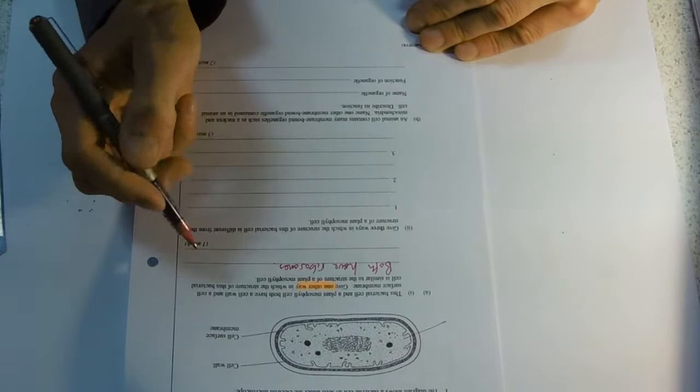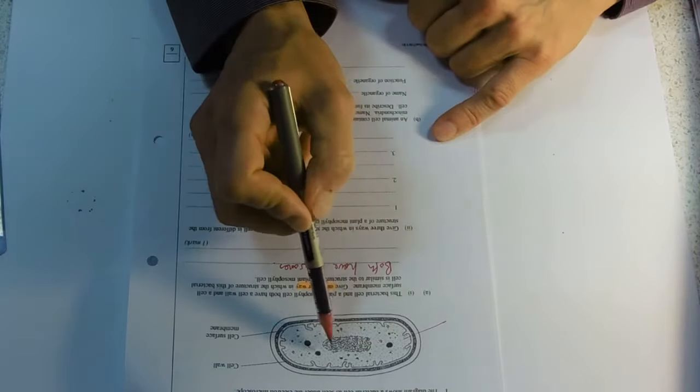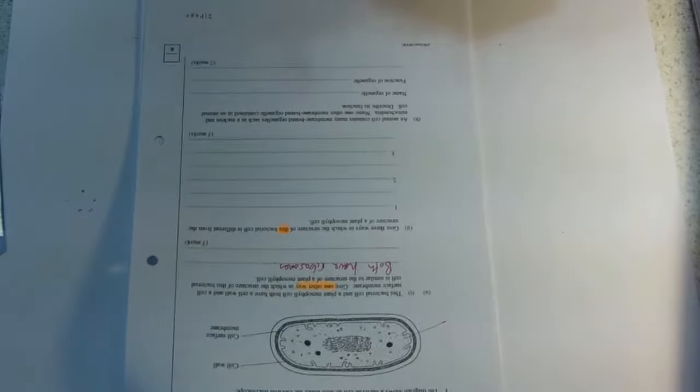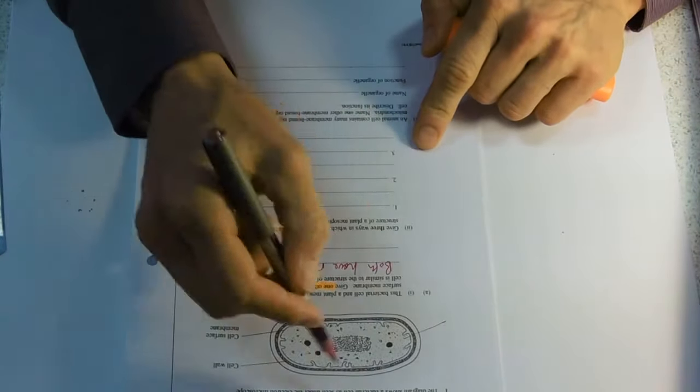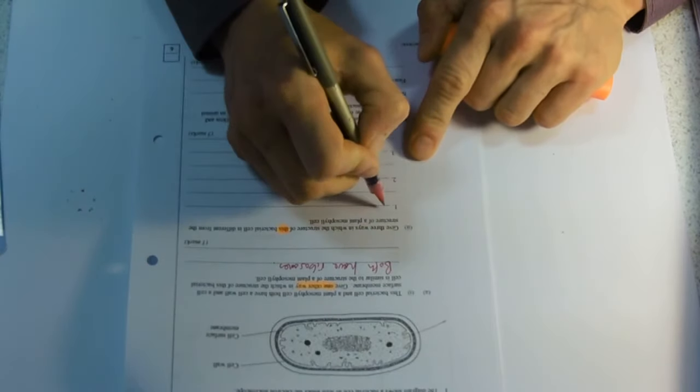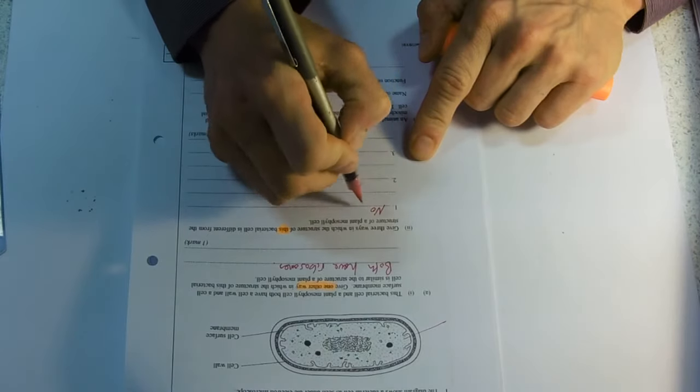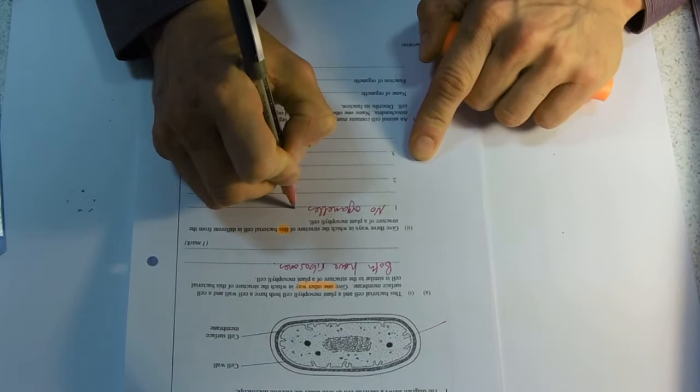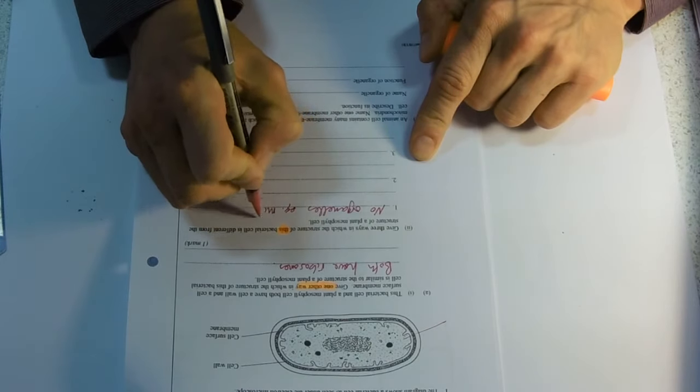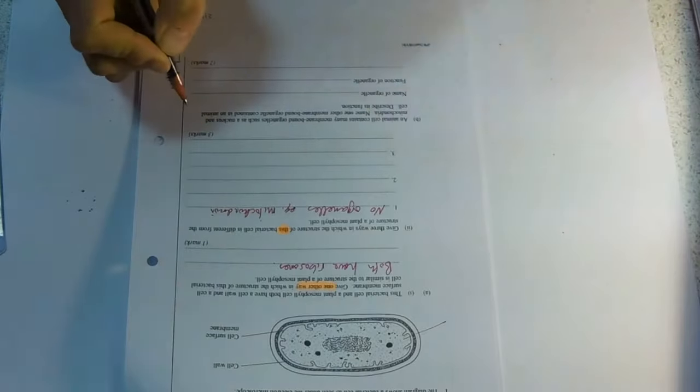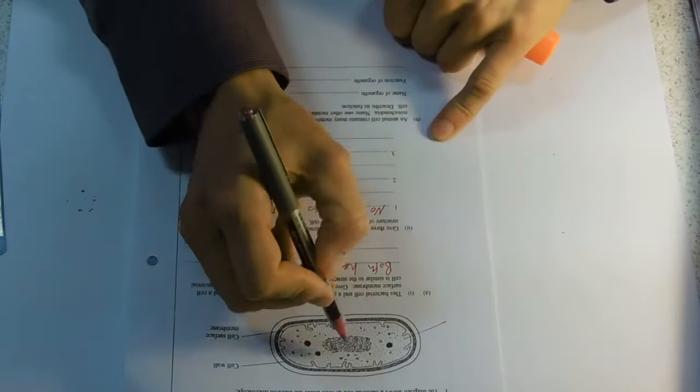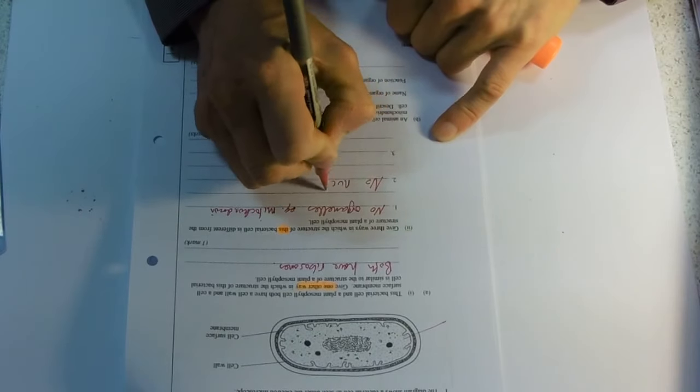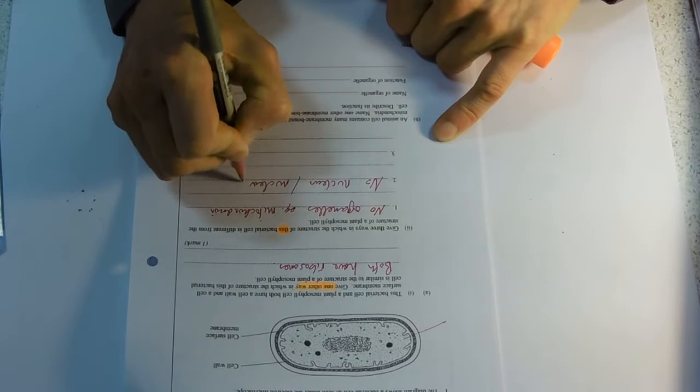Three ways in which the structure is different. So lots of things. We could talk about the nucleus here. And it says this bacterial cell, not a general bacterial cell, but this particular one. So we can't mention flagella or anything like that. So obvious differences here. We've got no organelles. So no organelles, e.g. mitochondrion, or any other one that you can name. We could say there's no nuclear envelope or no nucleus here.